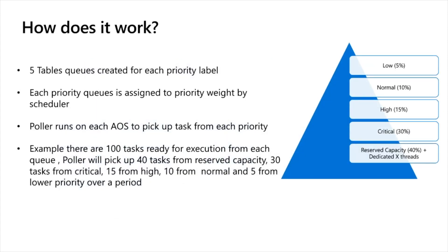How does Priority-Based Batch Scheduling work? The design uses a weighted pyramid system: 40% weightage to reserve capacity (highest priority), 30% to critical, 15% to high, 10% to normal, and 5% to low priority batch jobs. This is not an absolute number of threads — it is a weighted system. It is not that 40 out of 100 threads are exclusively assigned to reserve capacity; rather, it increases the probability of executing a batch job from the corresponding priority.